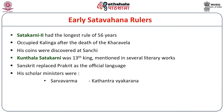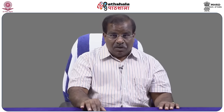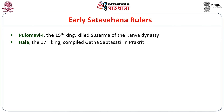The court of Kuntala Satakarni was adorned with several scholars in Prakrit and Sanskrit. Sarva Varma authored Katantra Vyakaranam. Gunadya, another minister, authored the Vrihat Katha, a famous work in ancient literature. Pulo Mavi, the 15th king, killed Susharman of the Kanva dynasty. Hala, the 17th king, is important for his literary work — he compiled the Gatha Saptashati in the Prakrit language.